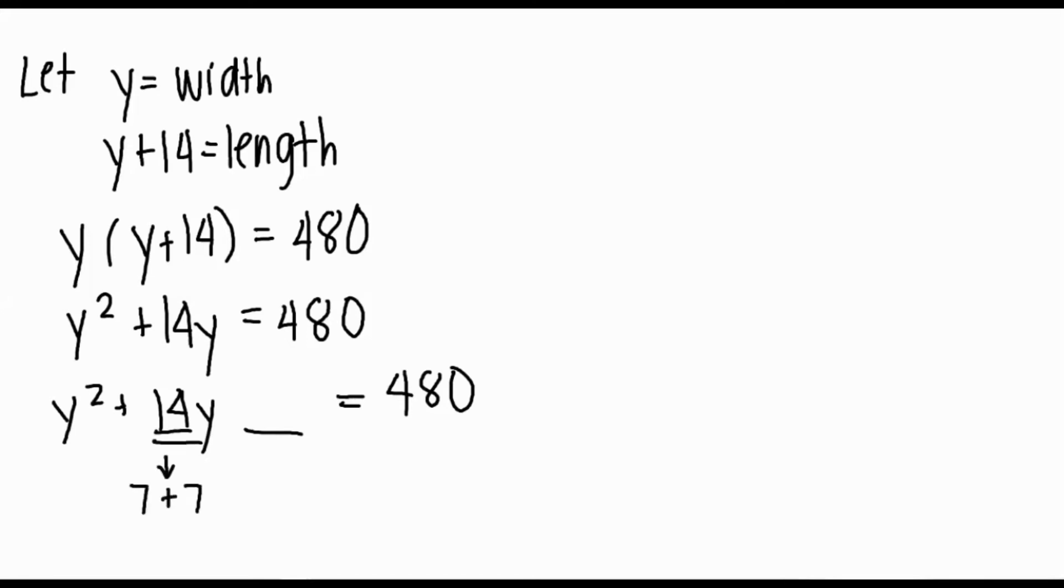Let's find two numbers that will add up to 14, which is 7. As we multiply them, we get 49. So when we add to the left side, we also add to the right side. So now we have y plus 7 squared is equal to 529.